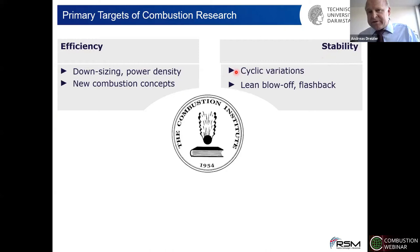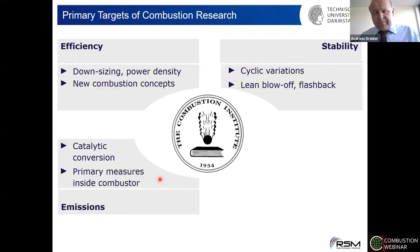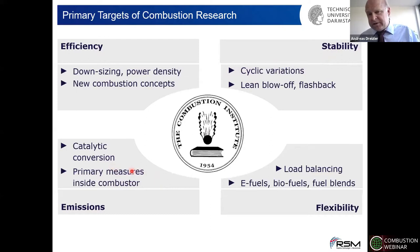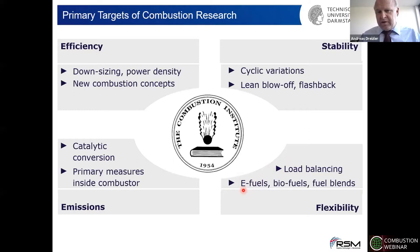The second primary target is stability. We have to improve it, for example in auto engines to reduce cycling variations, or in gas turbines to prevent lean blow-off or flashback. The third target is about polluted emissions — we have to reduce them further through primary measures inside the combustor and secondary measures by catalytic converters. The fourth is flexibility: for power generation from sustainable energies like wind and solar we need to balance them using gas turbines, and we need flexibility in terms of fuels given the higher diversity expected in e-fuels, biofuels, and fuel blends.